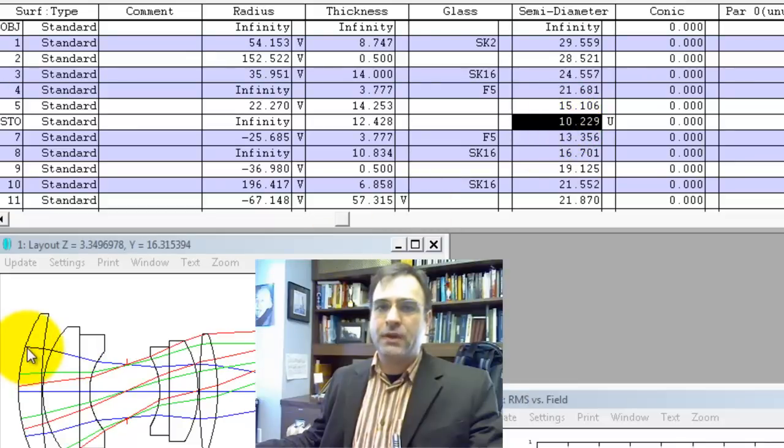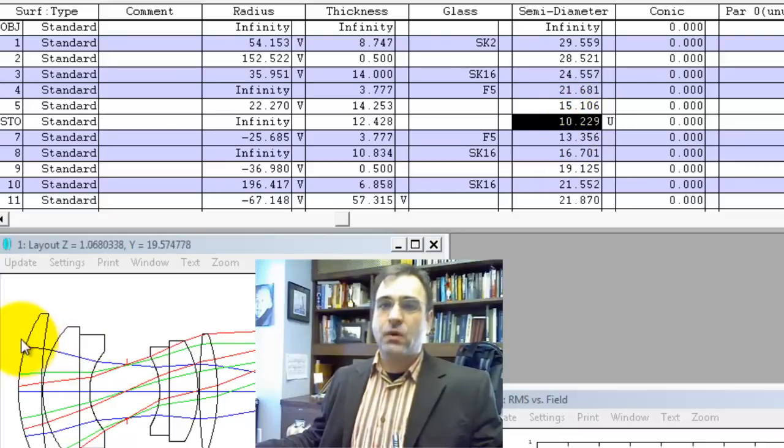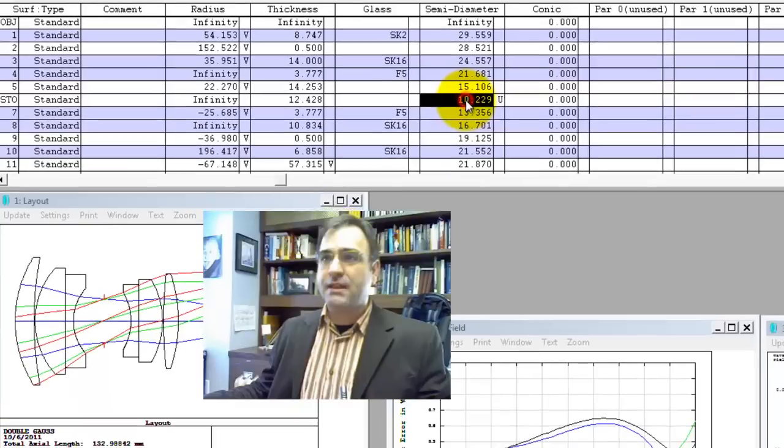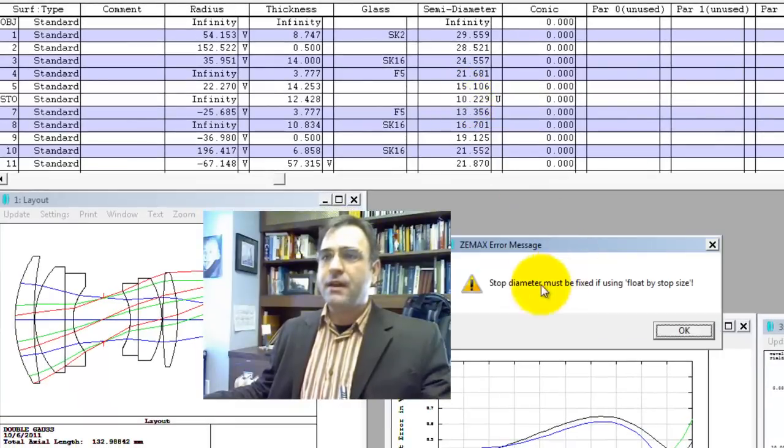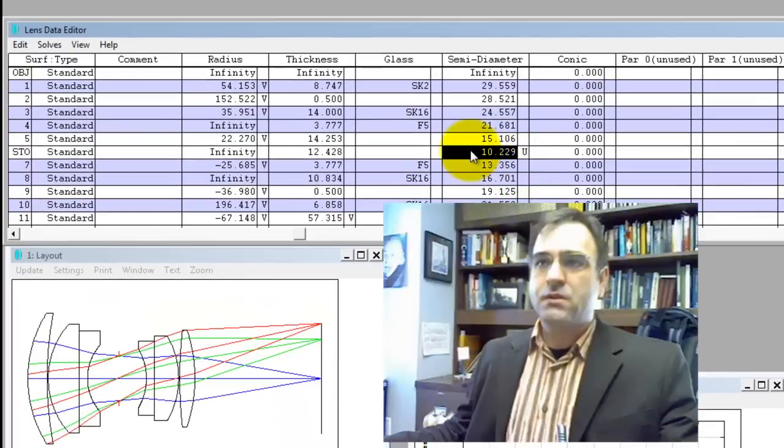It keeps the same entrance pupil diameter you have, but it specifies what this aperture stop is. And ZEMAX is going to figure out it's a 33 millimeter diameter. If I try and take this diameter off, it gives me an error. Stop diameter must be fixed if using float by stop size. So that's the difference.